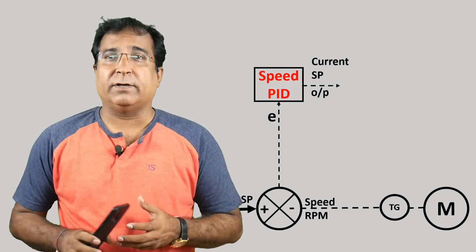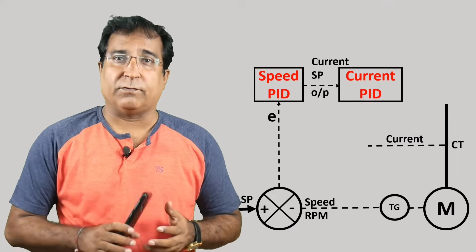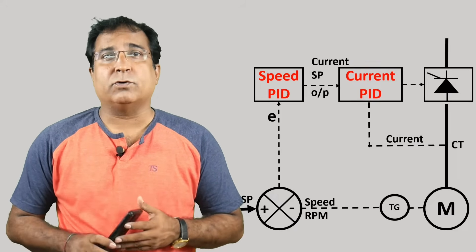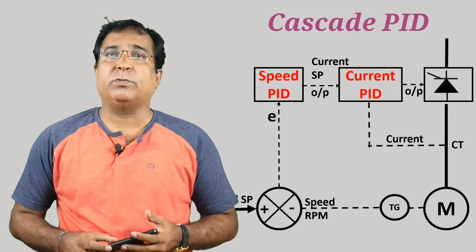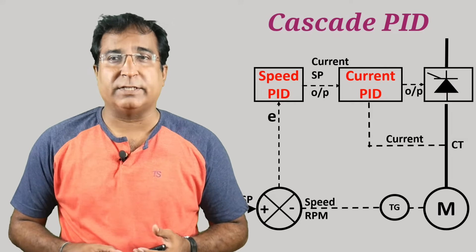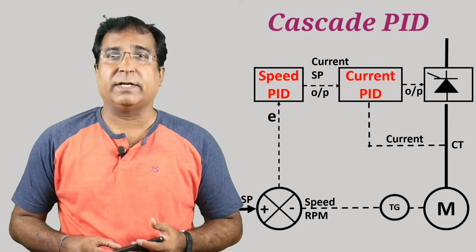As we have in variable control drives, the outer loop is of speed and the inner loop belongs to current controller. Here the output of speed PID controller becomes the setpoint for the current controller.